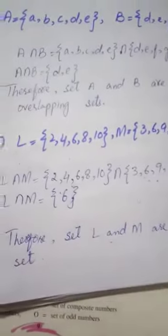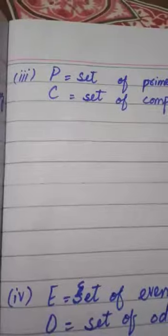This means L and M are overlapping sets. Here we will write, therefore, set L and M are overlapping sets. Next, let's see. In third part,